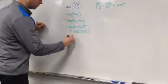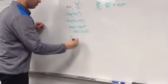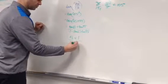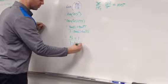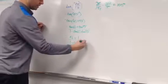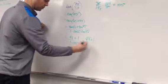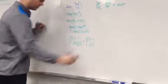Tangent of 60 is root 3. Tangent of 45 is 1. Tangent of 60 is root 3. Tangent of 45 is 1. So I'm sitting at root 3 plus 1 all over 1 minus root 3.